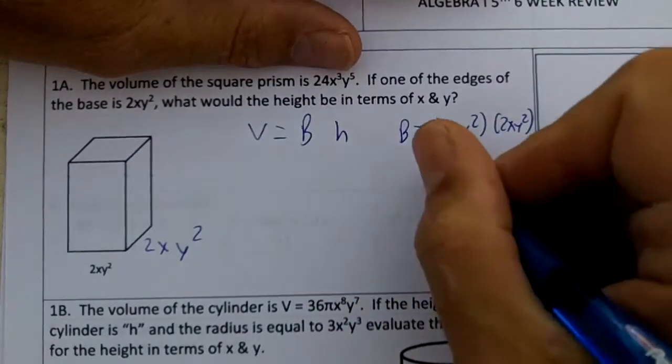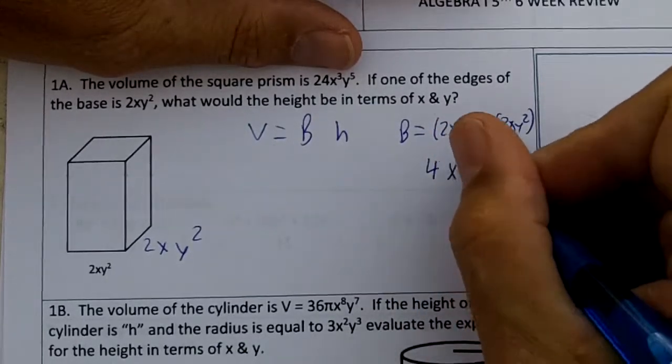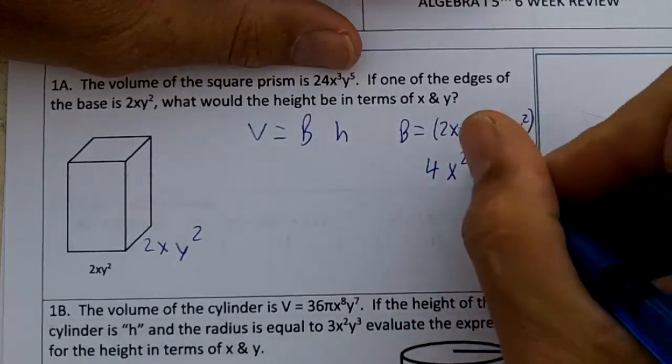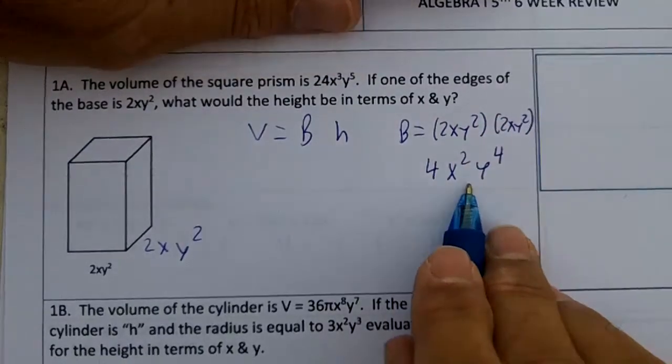2 times 2 is 4. x times x is x². y² times y² would be y⁴. So our area of the base is this.